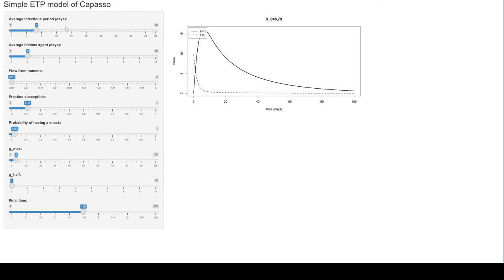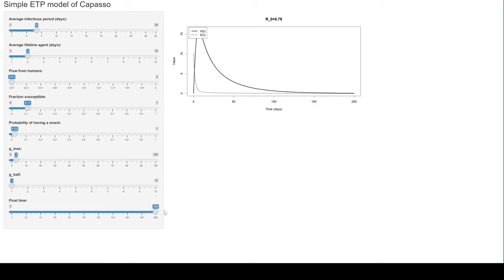Here I have an R0 that's less than one — it's 0.79. What we have is first a spike in the number of humans infected, but then everything goes to zero. If I look at a longer timespan, you can see the solution goes essentially to zero.